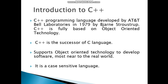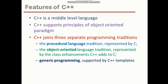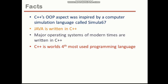It means lowercase is different and uppercase is different. What are the features of C++? C++ is a middle-level language. C++ supports the principle of Object Oriented Programming. C++ joins three separate programming traditions: the procedural language tradition represented by C, the object-oriented language tradition represented by class enhancements in C++, and generic programming supported by C++ templates. The fact is that C++ OOP aspect was inspired by a computer simulation language called Simula 67. Java is written in C++, and major modern operating systems are written in C++. C++ is one of the most used programming languages.